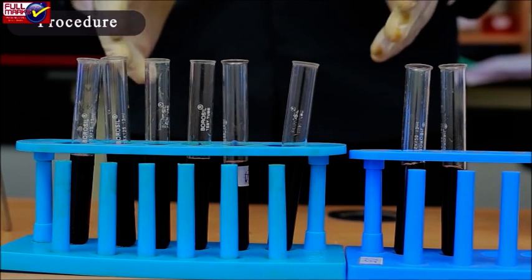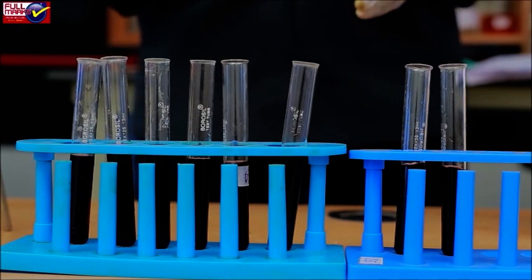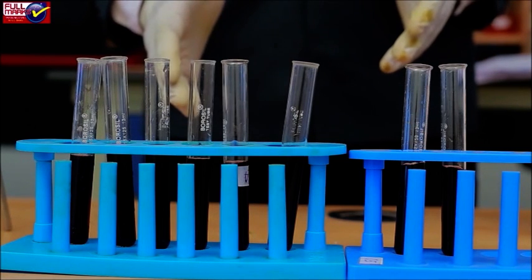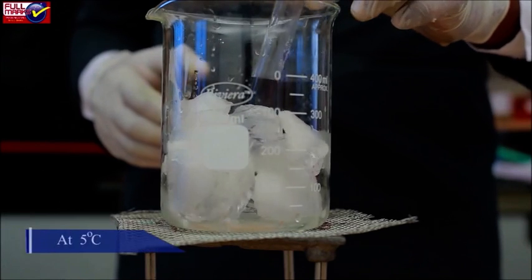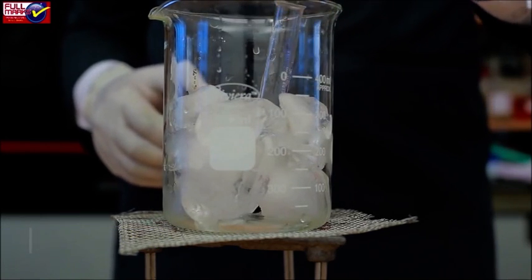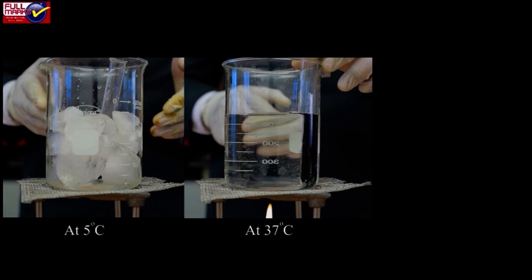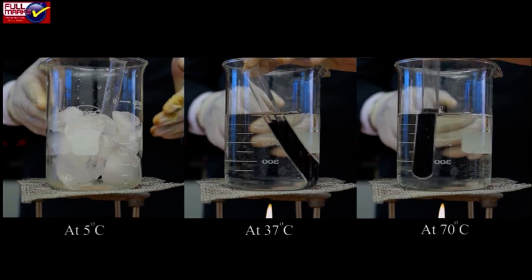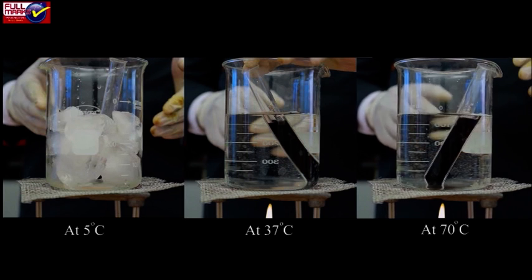Procedure: Prepare 3 sets of iodine tubes with 8 test tubes in each set. Add 1 ml of iodine solution in each test tube in separate stands. Add 5 ml of 1% starch solution and 1 ml of 1% NaCl solution in 3 experimental tubes and maintain them at 3 different temperatures of 5 degrees Celsius plus or minus 2 degrees Celsius, 37 degrees Celsius plus or minus 2 degrees Celsius, and 70 degrees Celsius plus or minus 2 degrees Celsius using separate water baths.